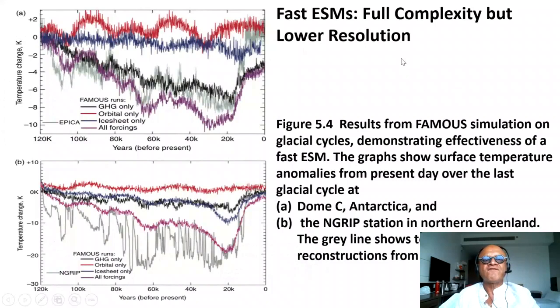Within that, we have things like fast ESMs, which have full complexity but much lower resolution, so they can do full transient runs going all the way back to the last interglacial, for example, and looking at greenhouse gas forcing only, orbital forcing only, and compare with data from EPICA Dome C to see what produces the best simulation. You can see the all-forcings in EPICA Dome C are the closest compared to these other forcings missing. And this is from Greenland, the same model for the same period.